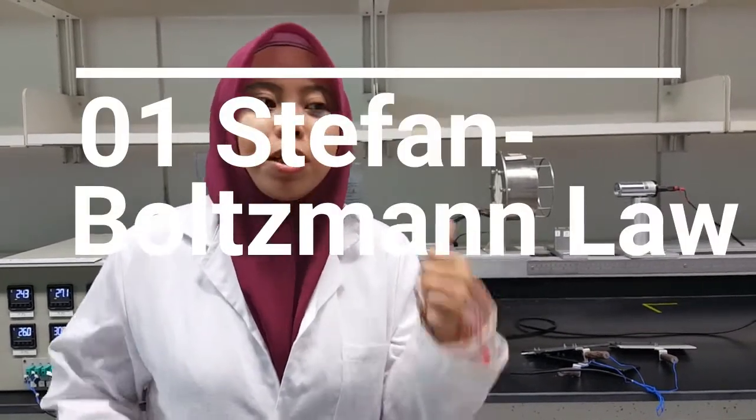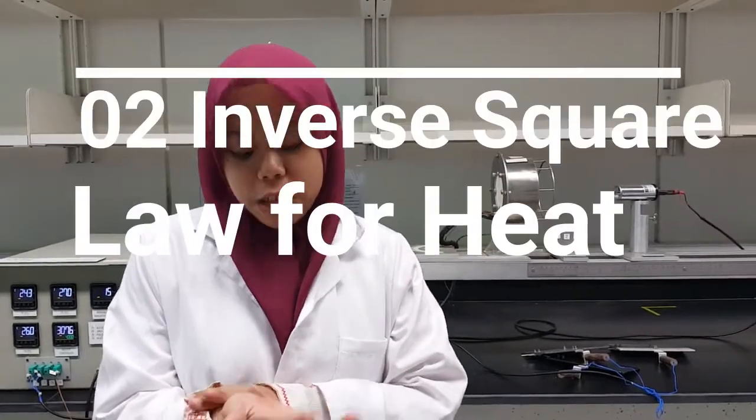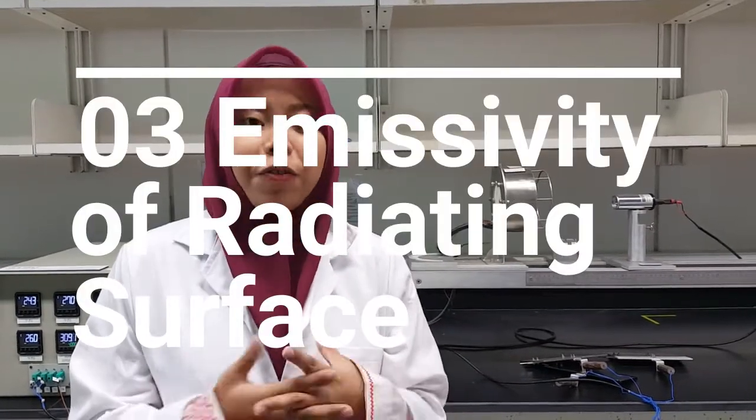So in this experiment we will do 3 parts. The first part is we will see Stefan-Boltzmann constants. The second part, we will see inverse square law for heat. And the third part, we will see emissivity of radiating surface.